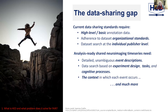There's a data sharing gap. FAIR requirements generally focus on high-level standardization at the dataset level, and dataset search is generally at the dataset level for publishers. Unfortunately, that's not the granularity that's actually needed for analyzing neuroimaging time series — they need detailed, unambiguous event descriptions. Ideally, data search would be based on experimental design tasks and cognitive processes.